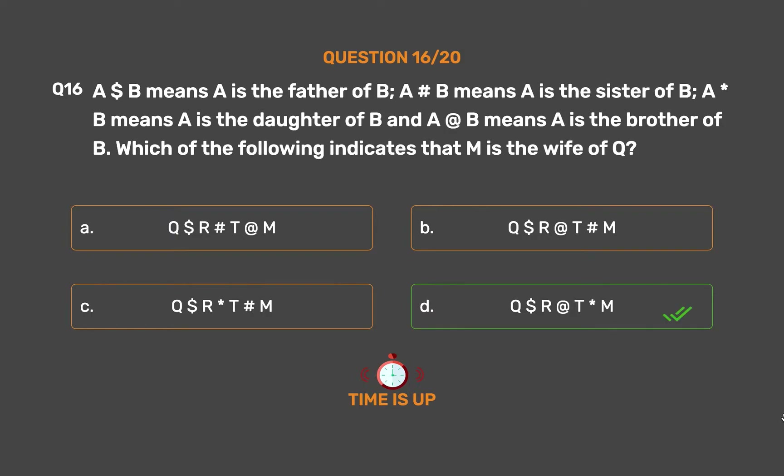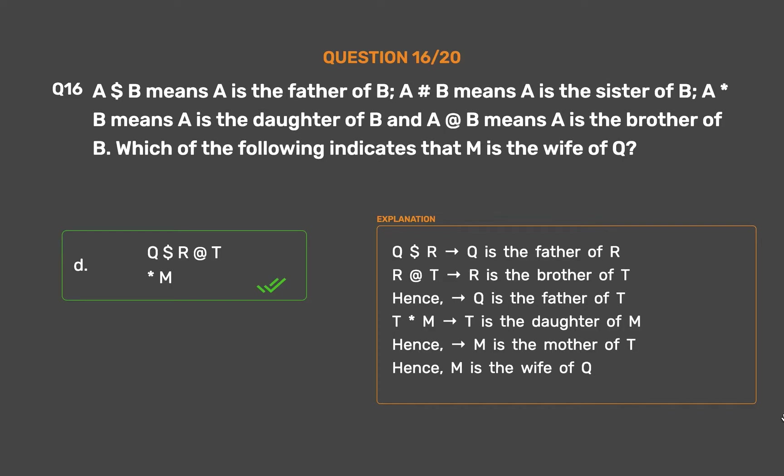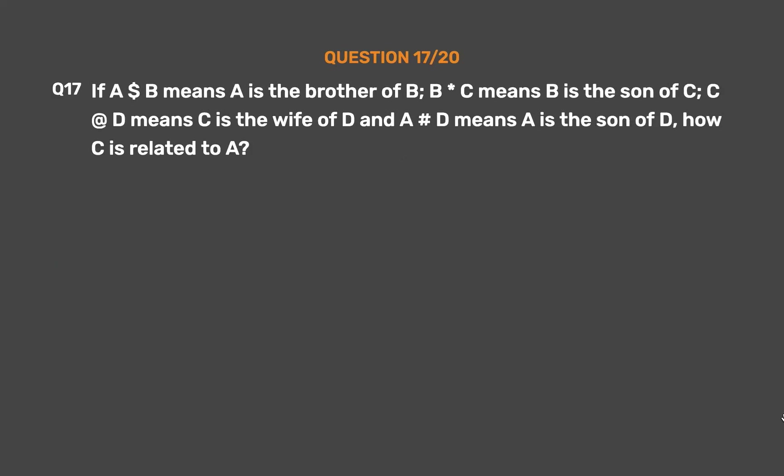Q $ R means Q is the father of R. R @ T means R is the brother of T, hence Q is the father of T. T * M means T is the daughter of M, hence M is the mother of T. Therefore, M is the wife of Q.